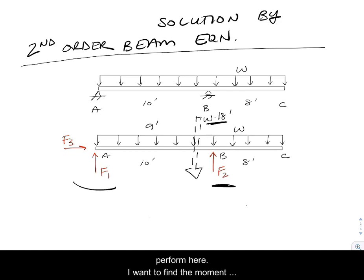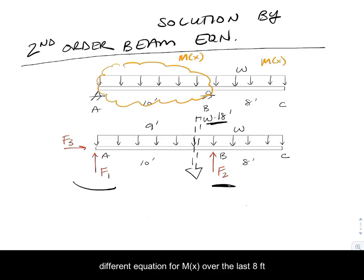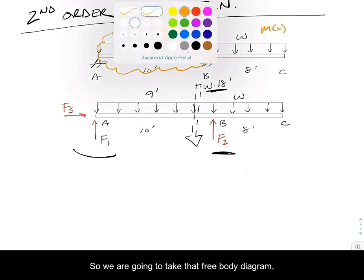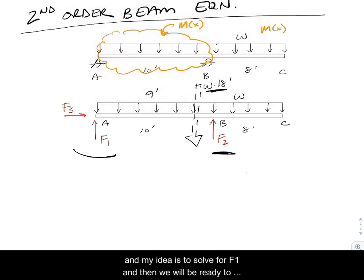I want to find the moment inside the beam. I'm going to be interested in the segment from A to B, from the pin to the roller. There's going to be a different equation for m of x over the last eight feet, but we can solve the problem as asked with just the moment inside the first 10 feet of the beam. I'm going to solve for F1 and then we'll be ready to cut the beam open and find the moment inside of it. I'm going to spin a moment over there at point B.